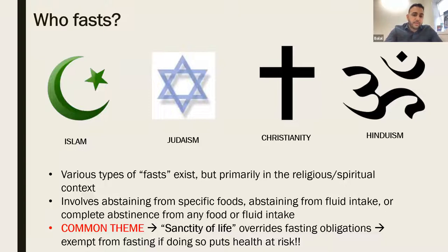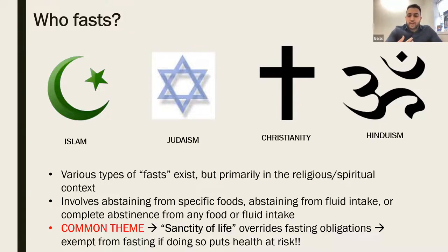We're talking today about fasting in the context of Ramadan for Muslims. It's the fourth pillar of Islam and involves complete abstinence from food, drink, smoking, and oral intake. But in other cultures and religions, we have fasting as well. In Judaism, for Yom Kippur, it's complete abstinence from food and drink for about 25 hours, from sunset on the evening before to about an hour after sunset the next evening. In Christianity, certain denominations have various types of fasting as well.